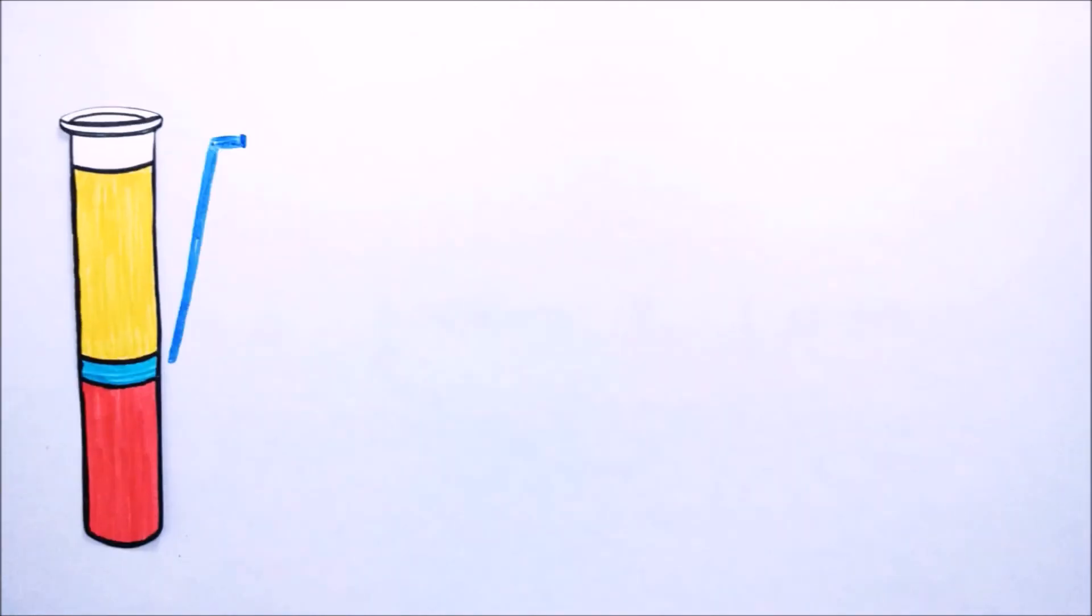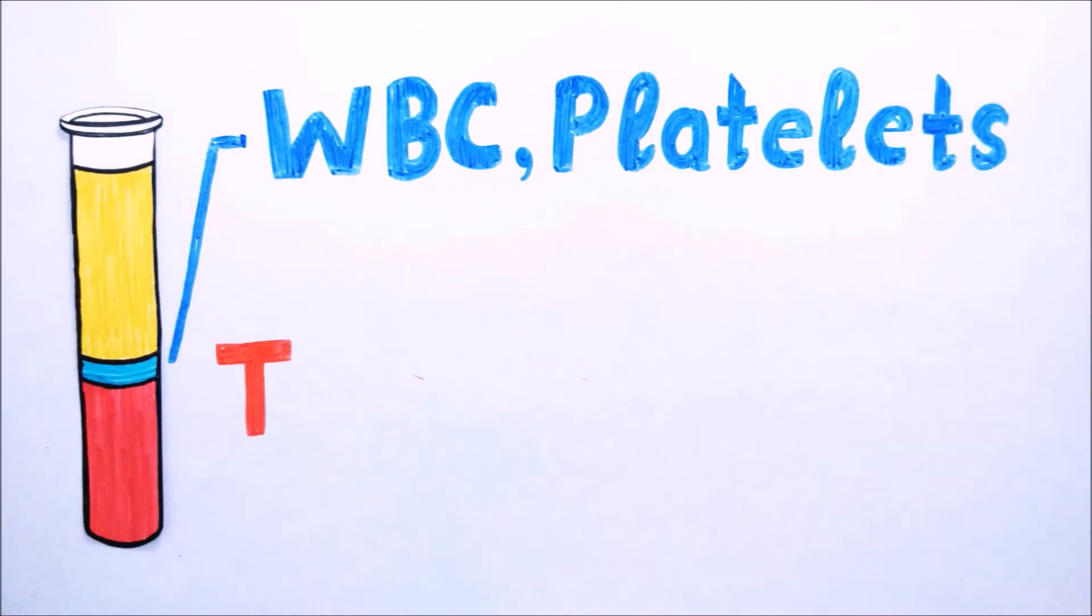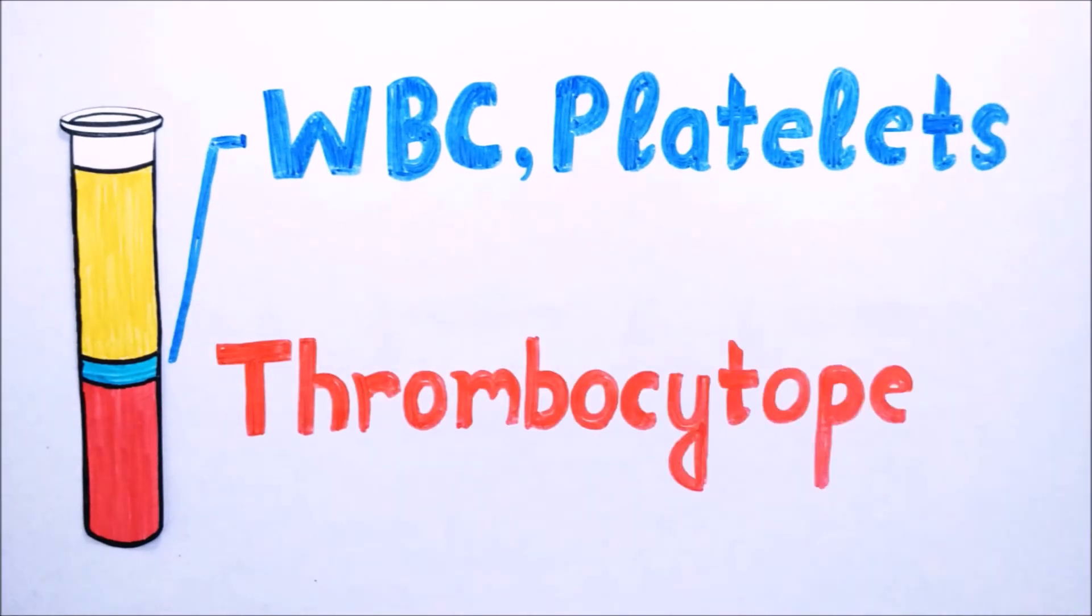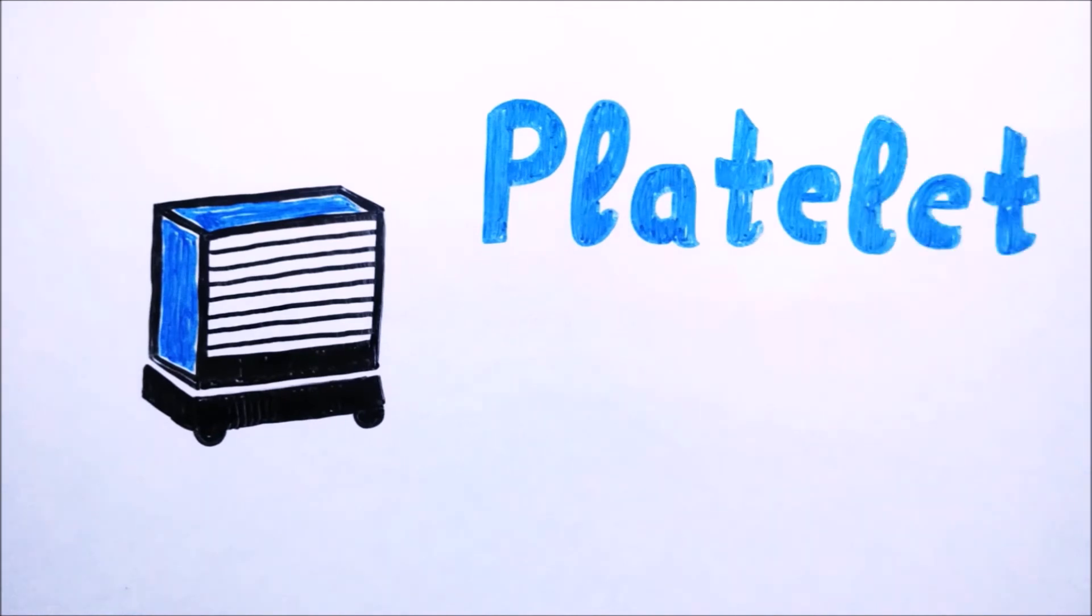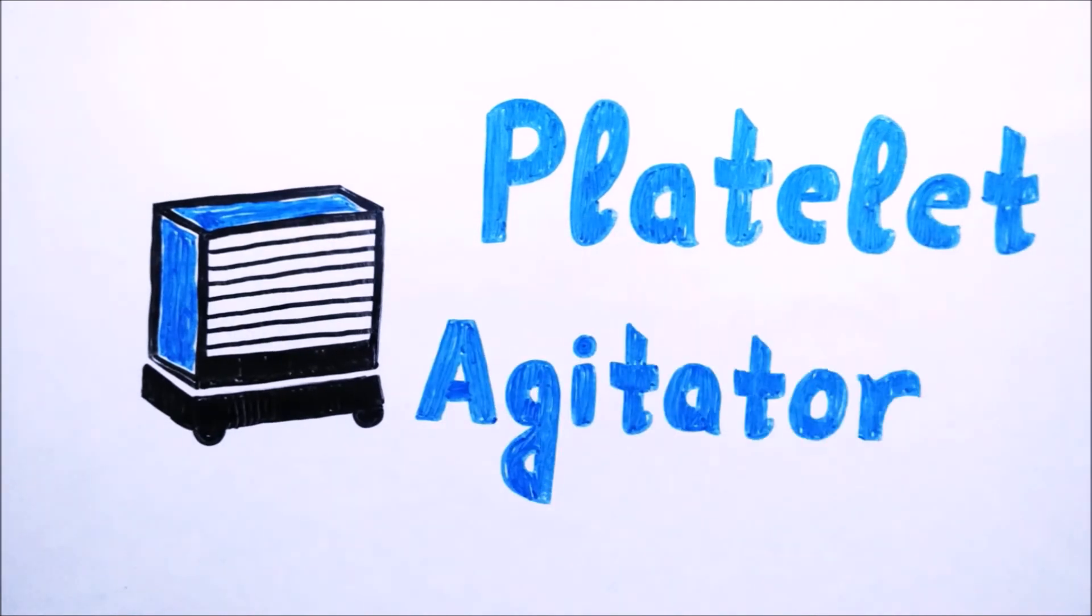The middle layer which is less than 1% of blood contains white blood cells, platelets, etc. It is used in thrombocytopenia and bleeding disorders. The platelets are kept at a device known as a platelet agitator.